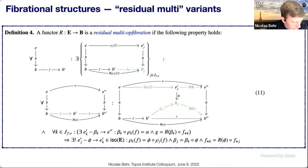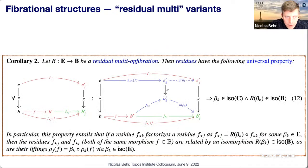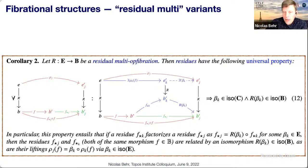These residues have a nice property: they are unsplittable, which is a semi-finality property. If you took morphism f followed by one of its residues and found another residue to split it, then the two residues would have to be isomorphic. So these residues have a certain finality property.